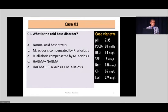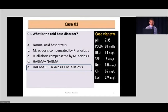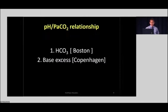The answer is high anion gap metabolic acidosis plus respiratory alkalosis, and there is a metabolic alkalosis also. The question is whether you can use the traditionalist approach to work out all of this within 15 to 20 seconds. We'll see how it is analyzed according to the traditionalist method. It's bicarb according to the Boston rule and base excess according to the Copenhagen rule.